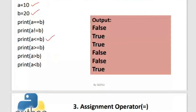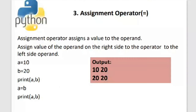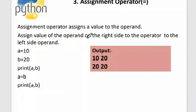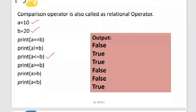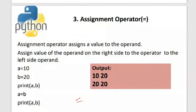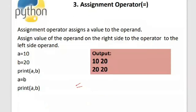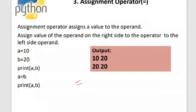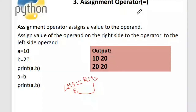Next is the assignment operator. As I said, single equal to is the assignment operator, while double equal to is the equality check. Don't get confused — you're already a C programmer so you should know this difference. The assignment operator has a left-hand side (LHS) and right-hand side (RHS); whatever is on the right side is placed into the left-hand side variable.